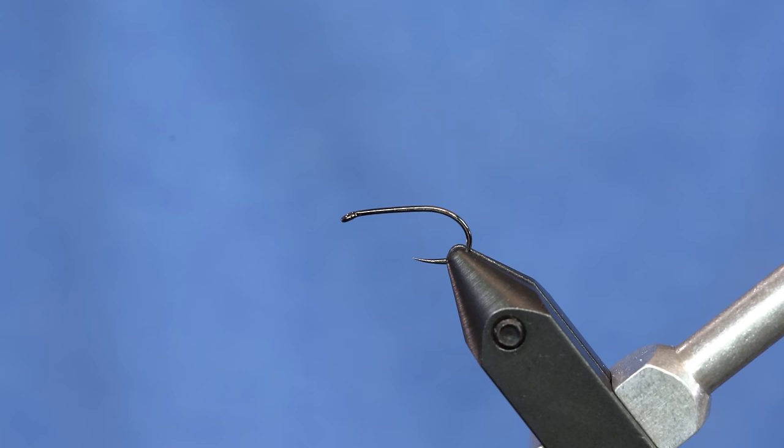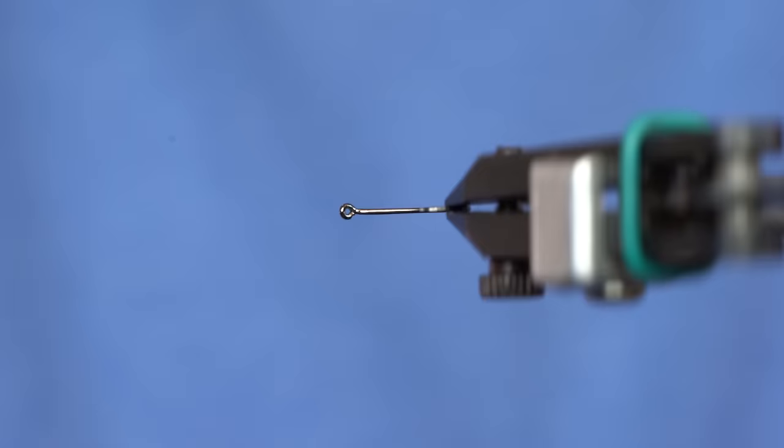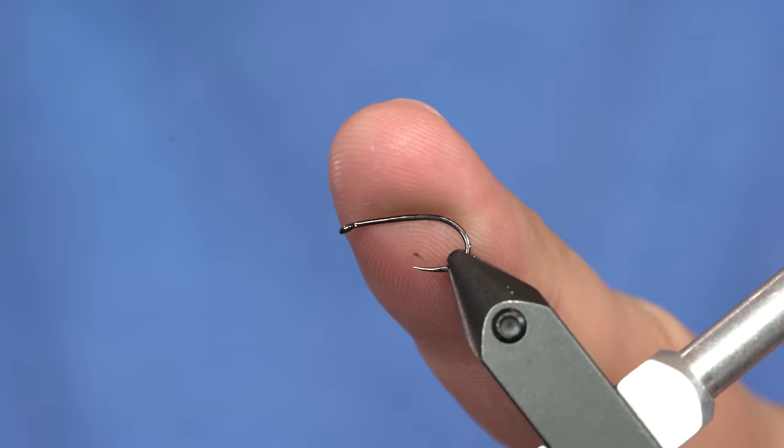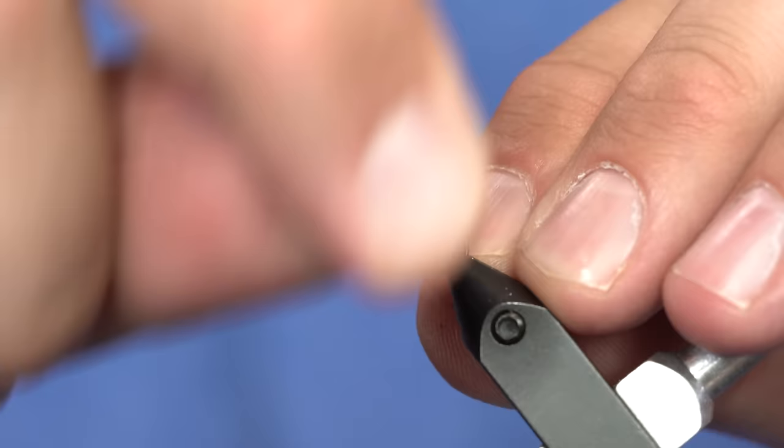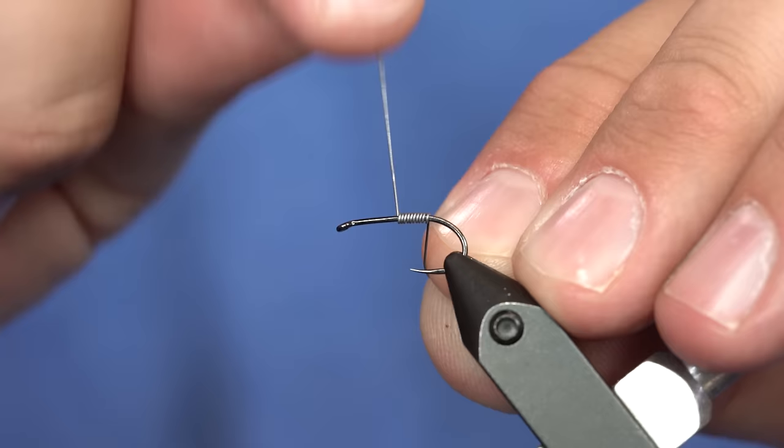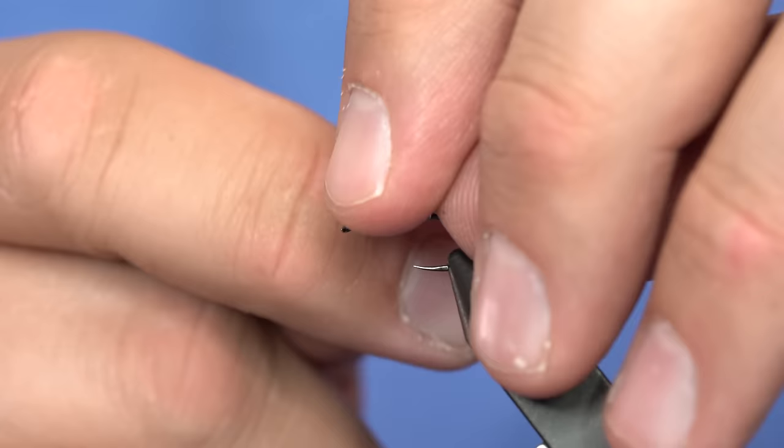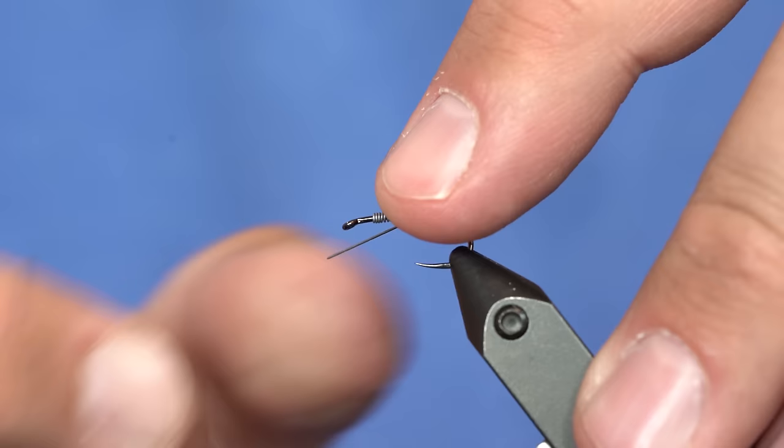First things first, we've got the trusty Fulling Mill Heavyweight Champ in the vise. So I'm going to take some 010 lead wire and make some snug wraps, between 15 and 50, depending on how heavy you want it. I'm going to wrap it about to there, put my finger on it, and just kind of wiggle. It'll break right off.